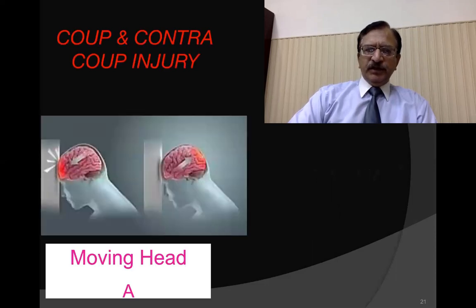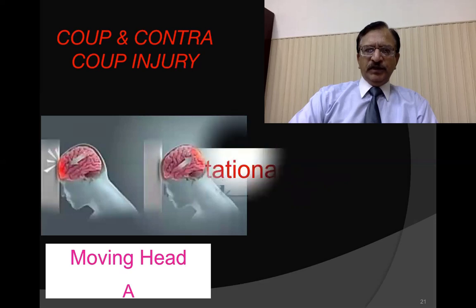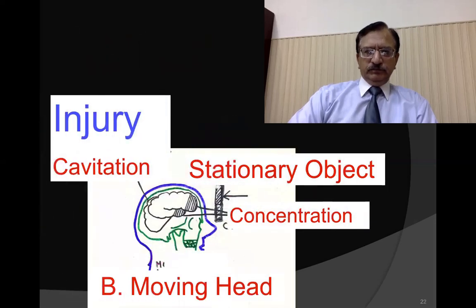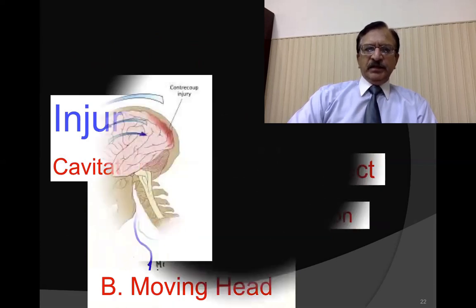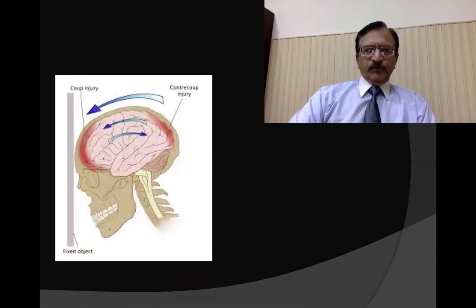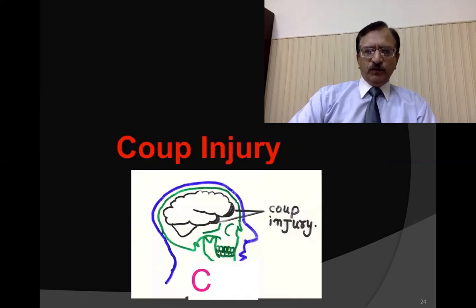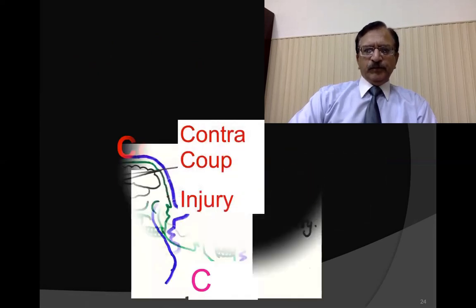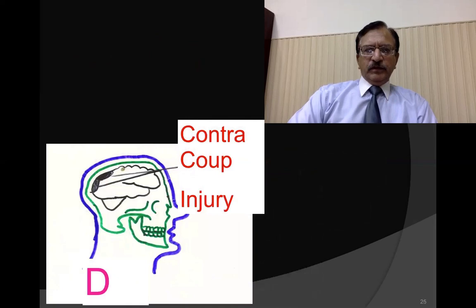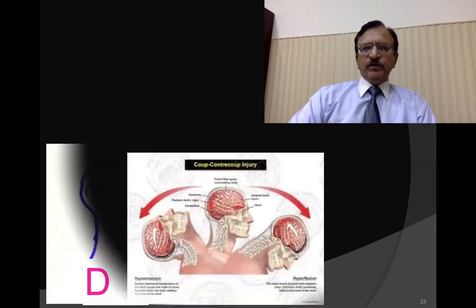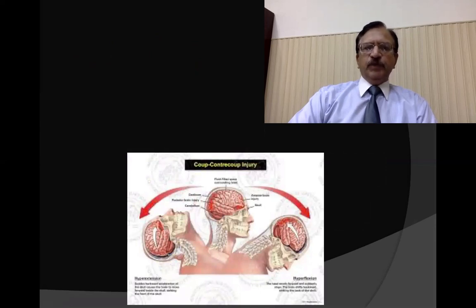Another picture shows a moving head striking a stationary object, illustrating coup and contra-coup injury. Additional diagrams further demonstrate the coup and contra-coup mechanism. To summarize: the coup injury is at the point of impact, and the contra-coup is opposite to the point of impact.